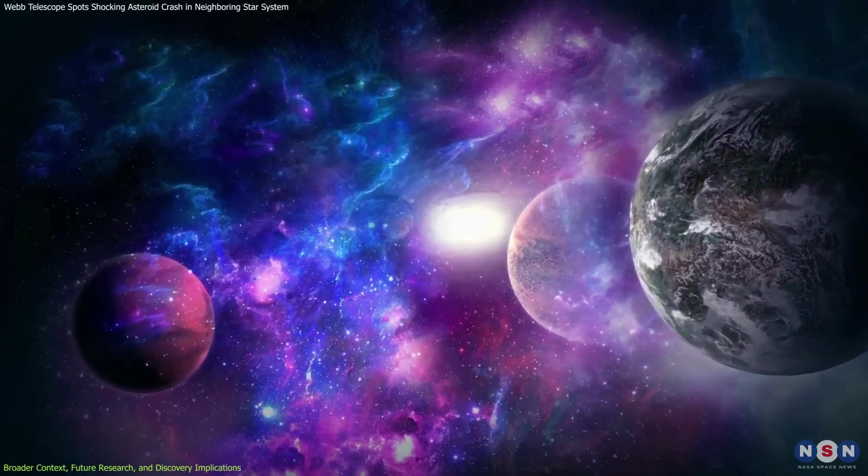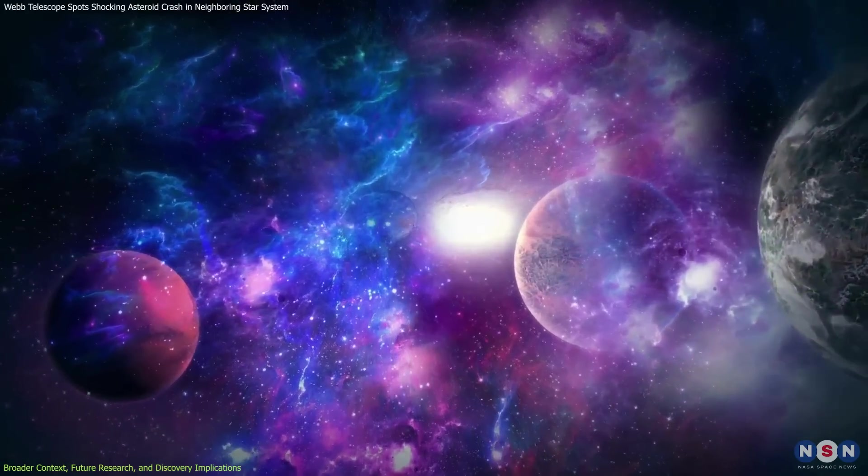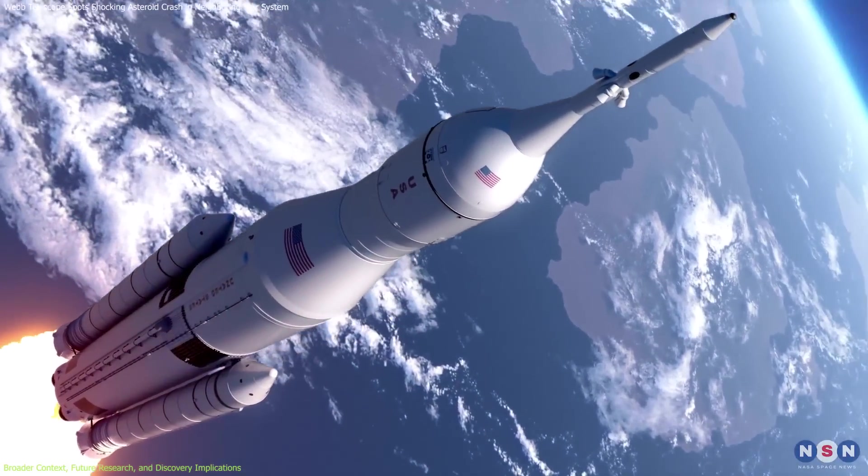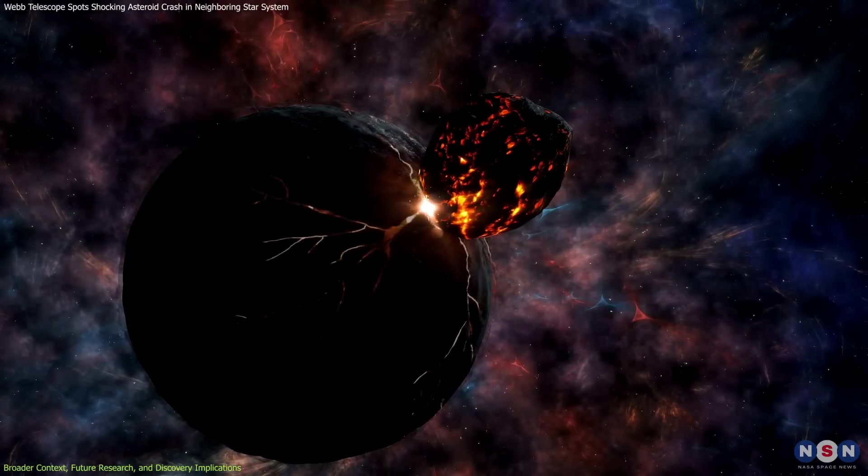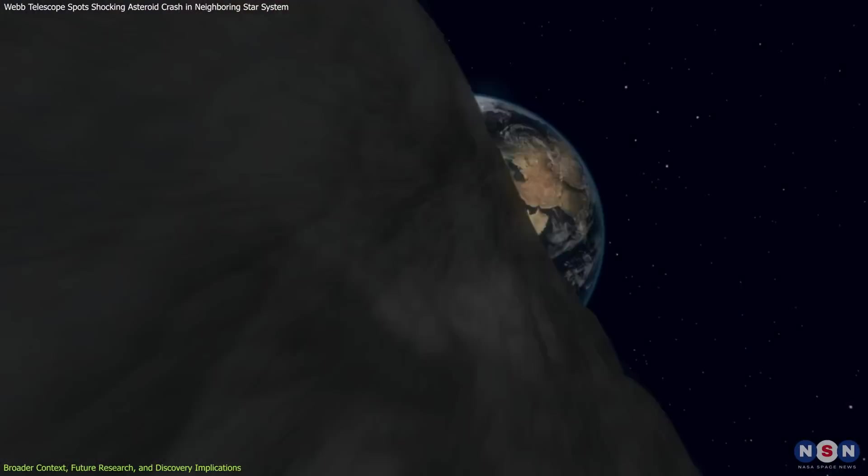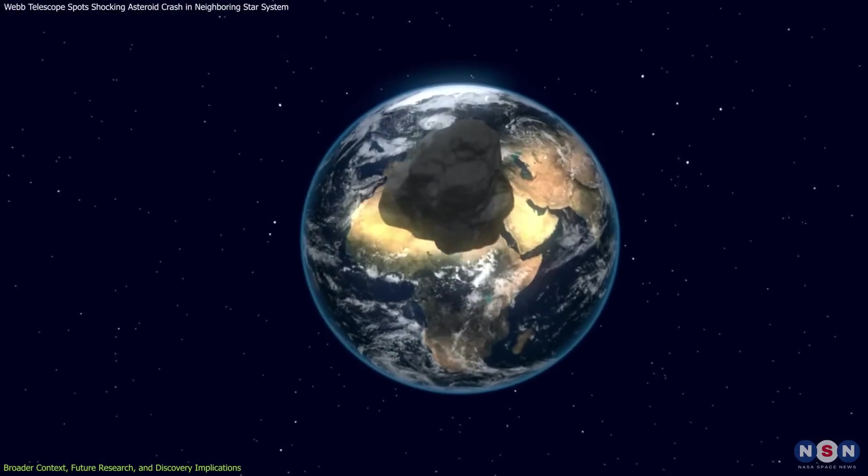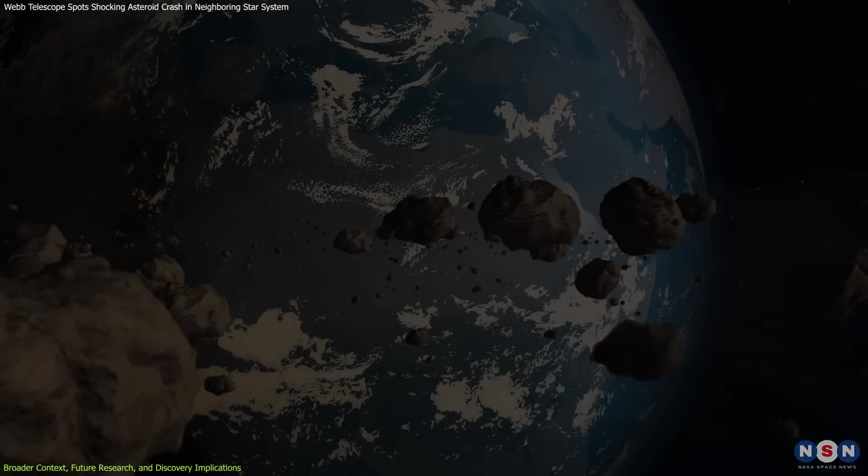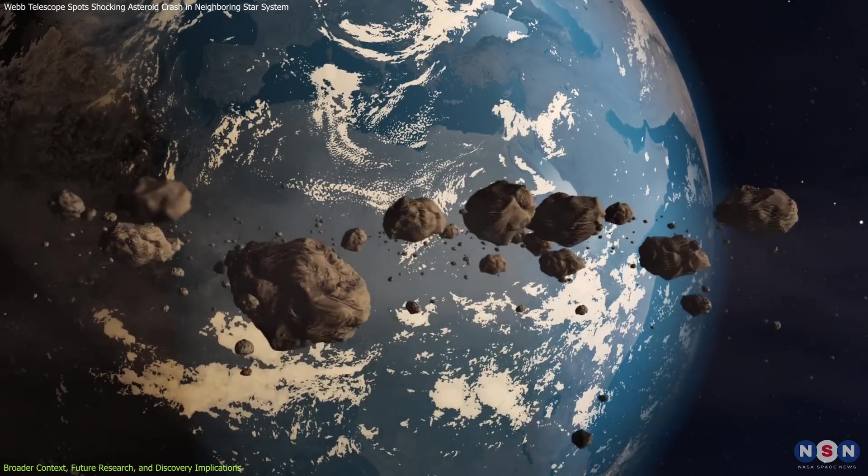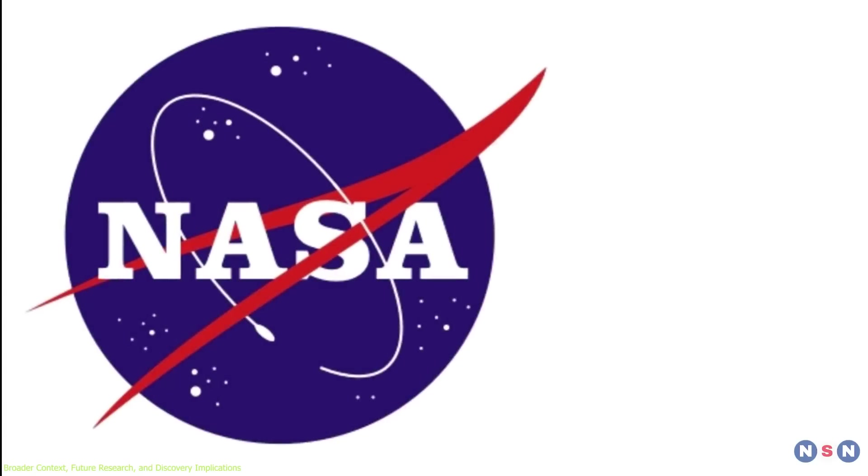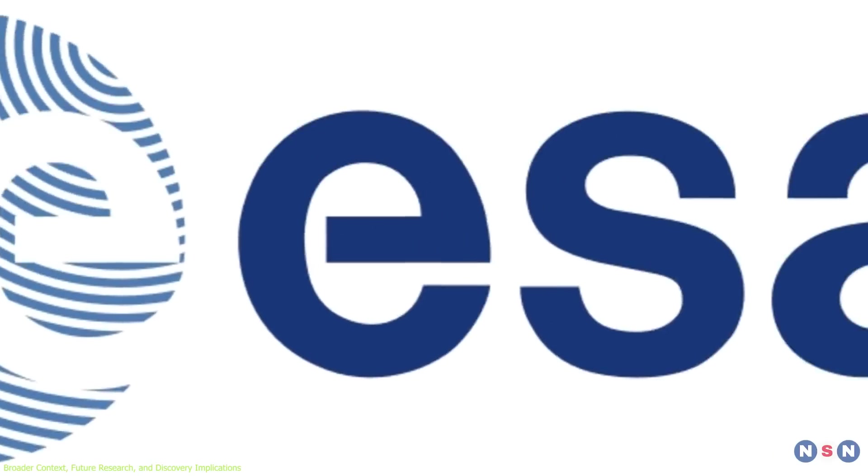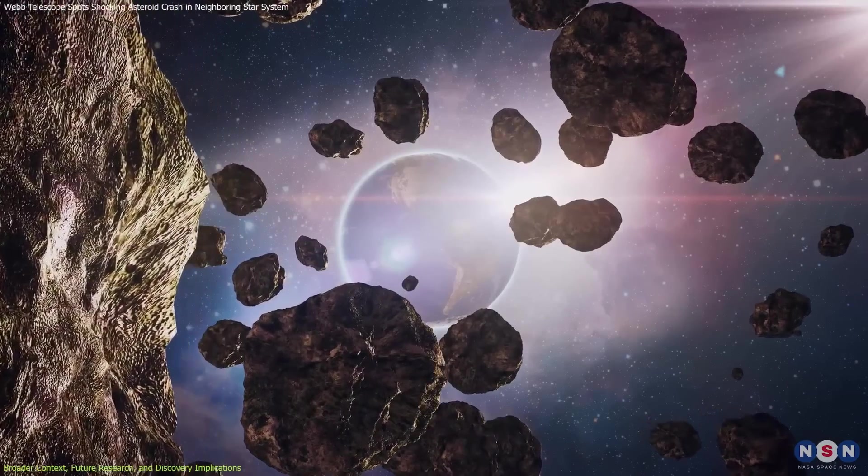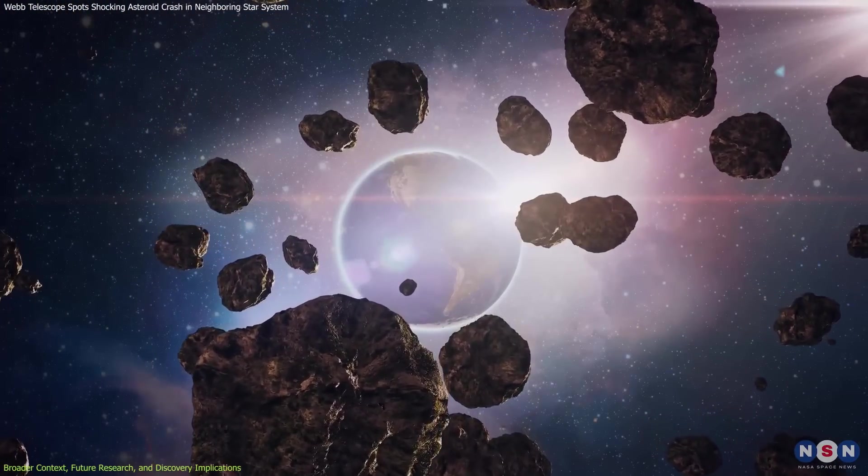Further implications of this discovery extend to planetary defense and future space missions. The detailed study of asteroid collisions in the Beta Pictoris system helps refine early warning systems for potential Earth impacts and informs mitigation strategies, such as deflection missions and kinetic impactors. Space agencies like NASA and ESA can enhance their monitoring of near-Earth objects using data from this system.